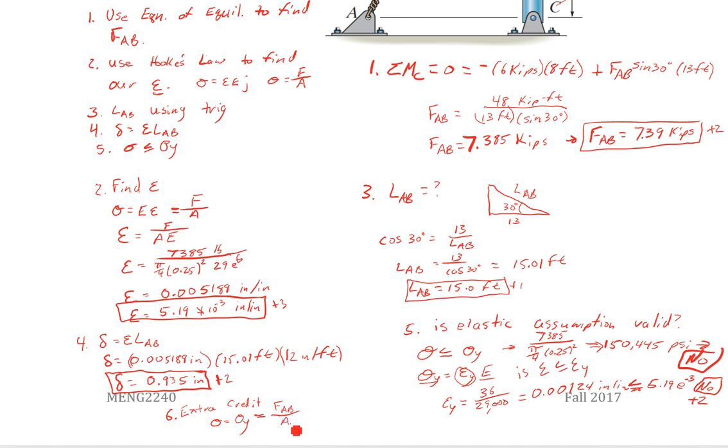So we're at yield. That's when we can no longer make the elastic assumption. That's the last point we can make that assumption. So that's going to be our FAB over our A required. And A required is going to be pi R squared, and we'll just multiply that R by 2. So we're going to have A equals FAB over 36,000 psi.